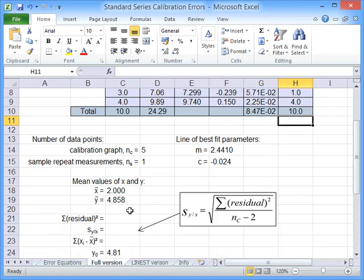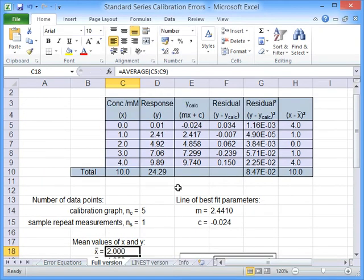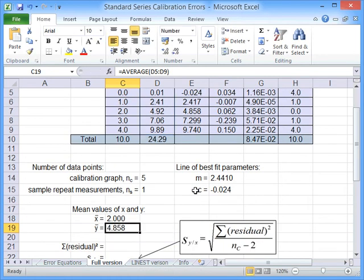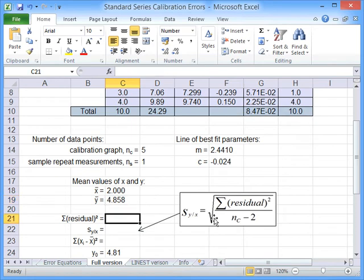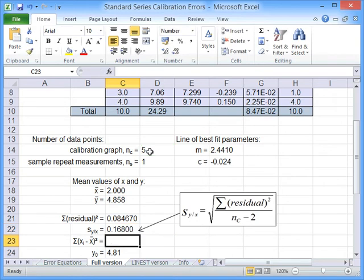So if we just come down here, we've got the mean value of X just by simply taking the average of that column. We've done the same for Y because we'll need that to implement the error equation later on. And then we come to the next bit. So we need the sum of the residual squared and that is simply that total there. To get SY of X we've got an equation. We have to say equals the square root of the sum of the residual squared divided by the number of calibration points which is 5 minus 2. And press enter. So now we've got our SY of X.